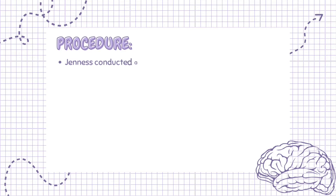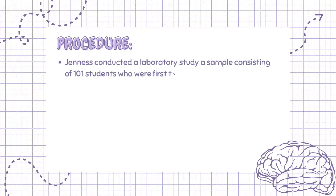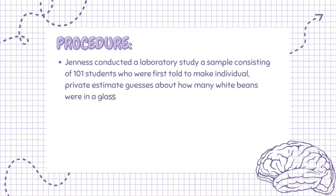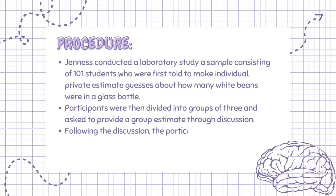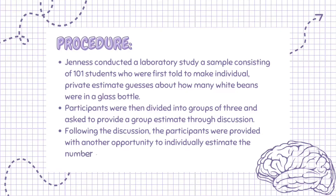Jeunesse conducted a laboratory study using a sample of 101 students who were first told to make individual and private estimate guesses about how many white beans were in a glass bottle — there were 811. Participants were then divided into groups of 3 and asked to provide a group estimate through discussion. Following the discussion, the participants were provided with another opportunity to individually estimate the number of beans.